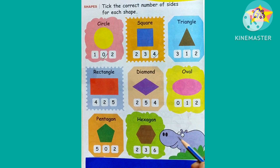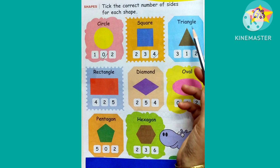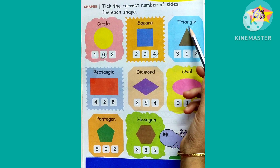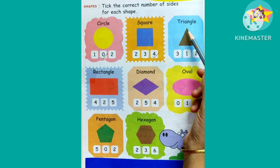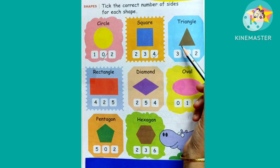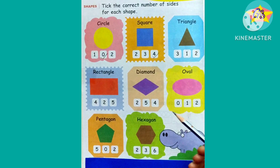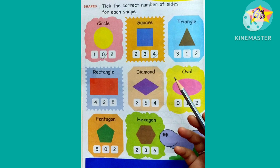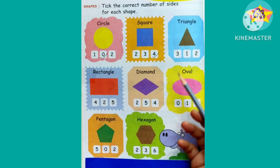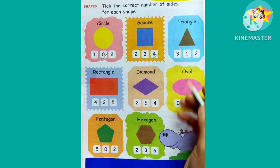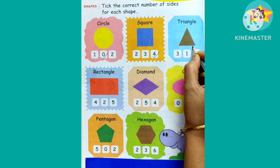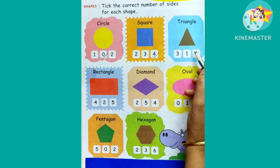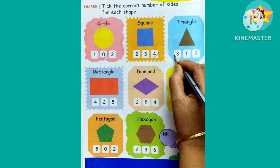The next shape is a triangle — in Hindi we call it 'tribhuj,' meaning three sides. We have to find out the sides, so let's count: one, two, three. Triangle has three sides, so we have to tick on the number three.